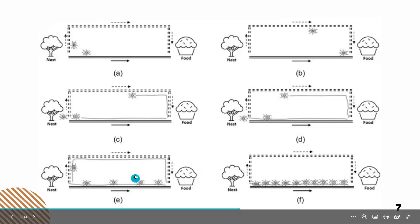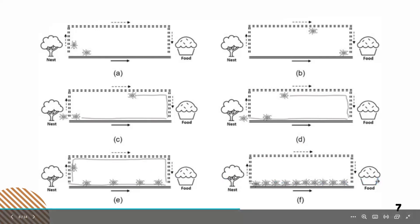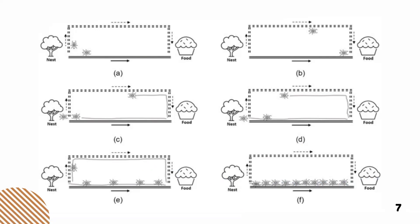Figure E tells us that upon returning to the colony, more ants had already traveled the path with the higher pheromone level than those who took the longer route. Therefore, when another ant tries to reach the food source, it discovers that each trail had the same pheromone level as the previous one, so it selects one at random. Finally, Figure F tells us that after several repetitions of this process, the shorter path has a higher pheromone level and is more likely to be followed, so all ants will take the shorter path.